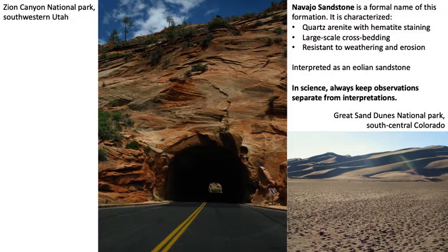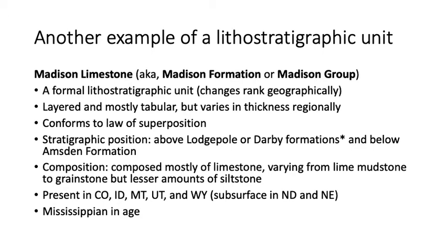Another example is the Madison Limestone or Madison Group — depending on where you are, it may be called the Madison Formation, Madison Limestone, or Madison Group. A rock unit can change its rank based on how important it is; if it includes several distinctive members, we might call it a group and elevate those members to formations. It is a formal unit that changes rank geographically, is layered and mostly tabular, and is relatively thick across much of Wyoming and Montana.